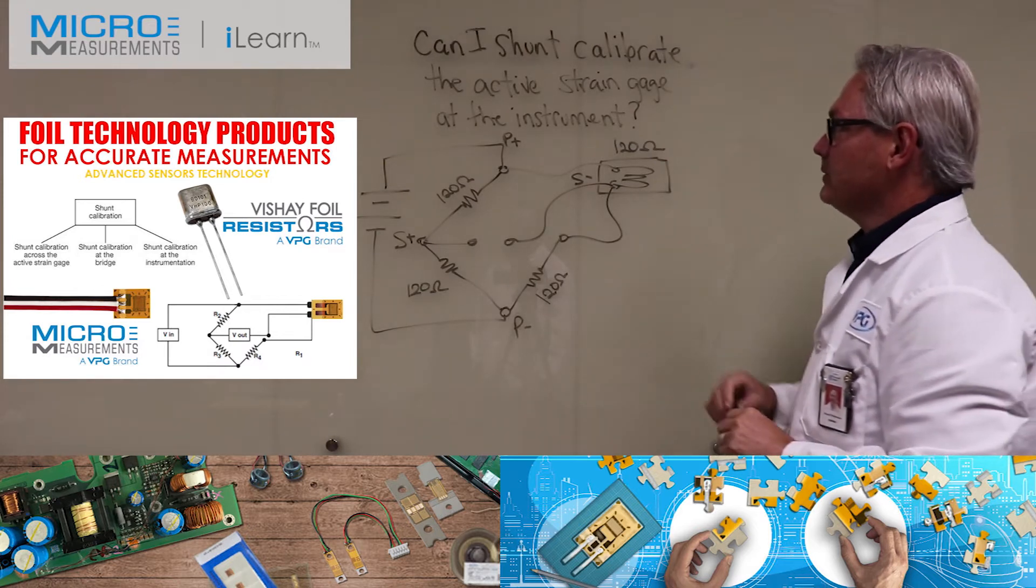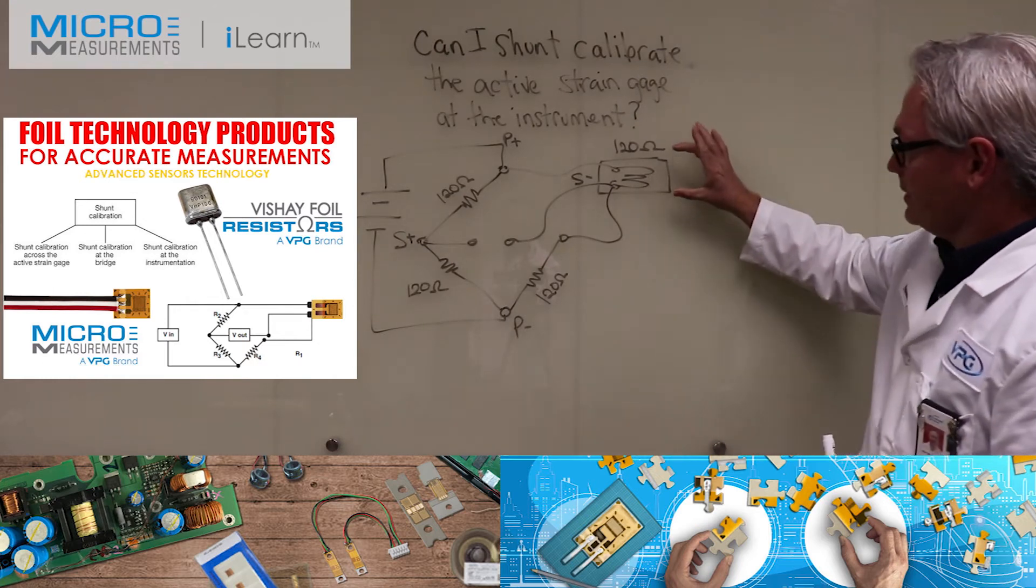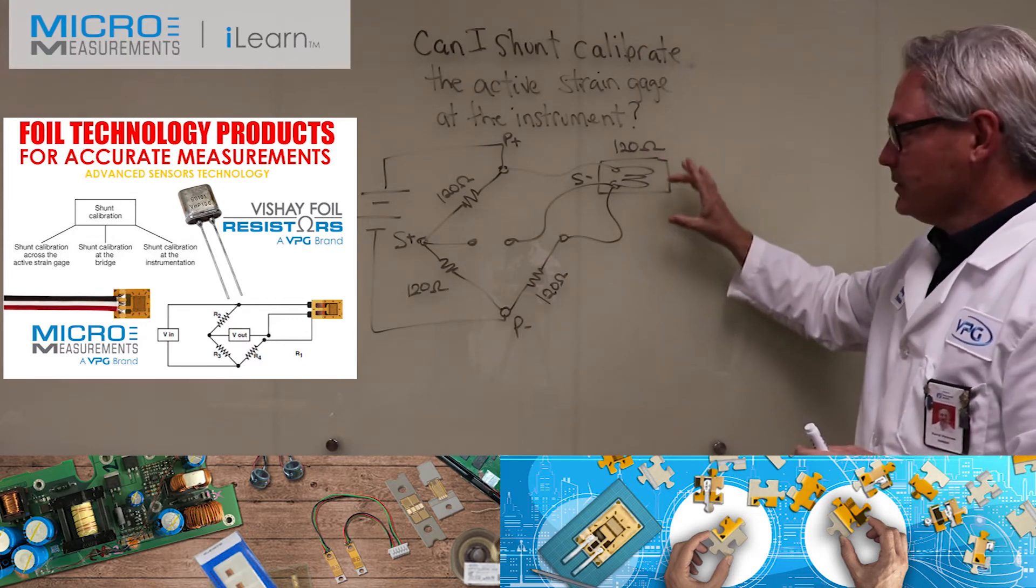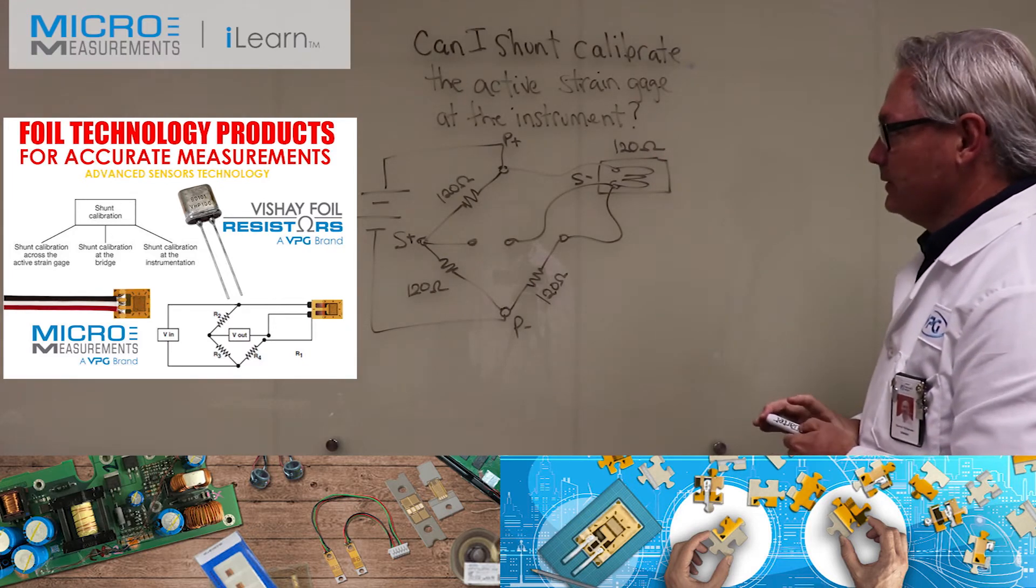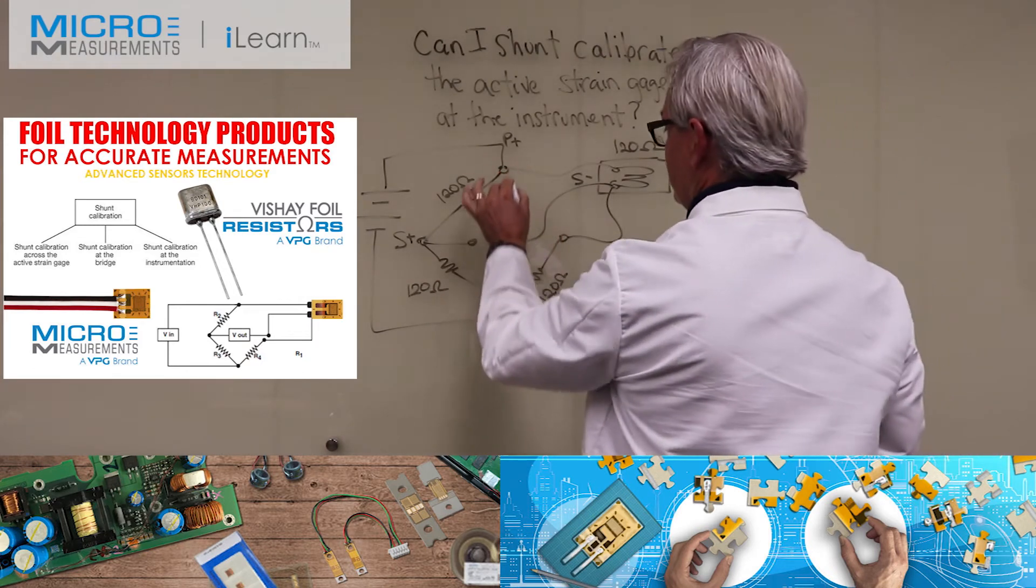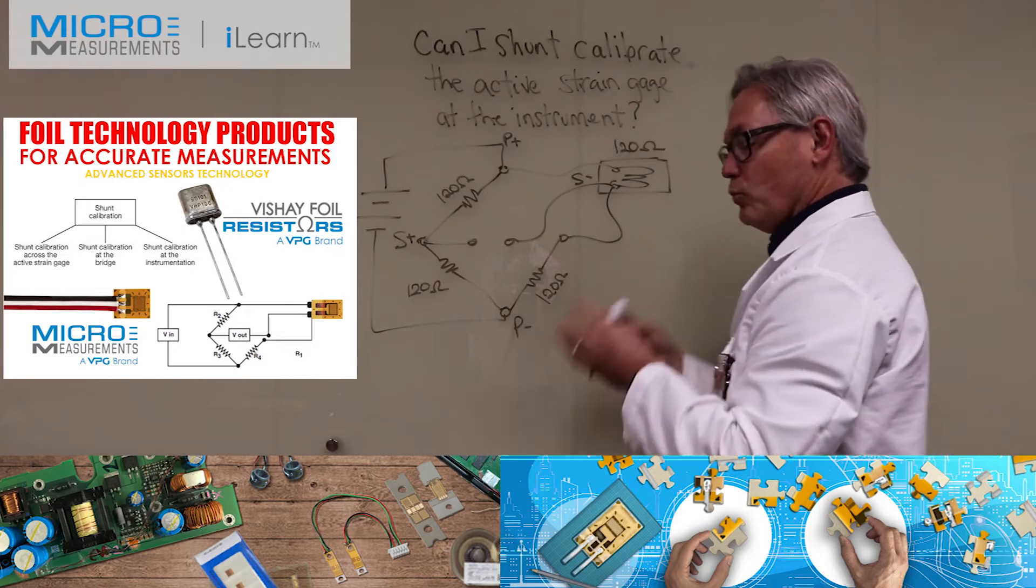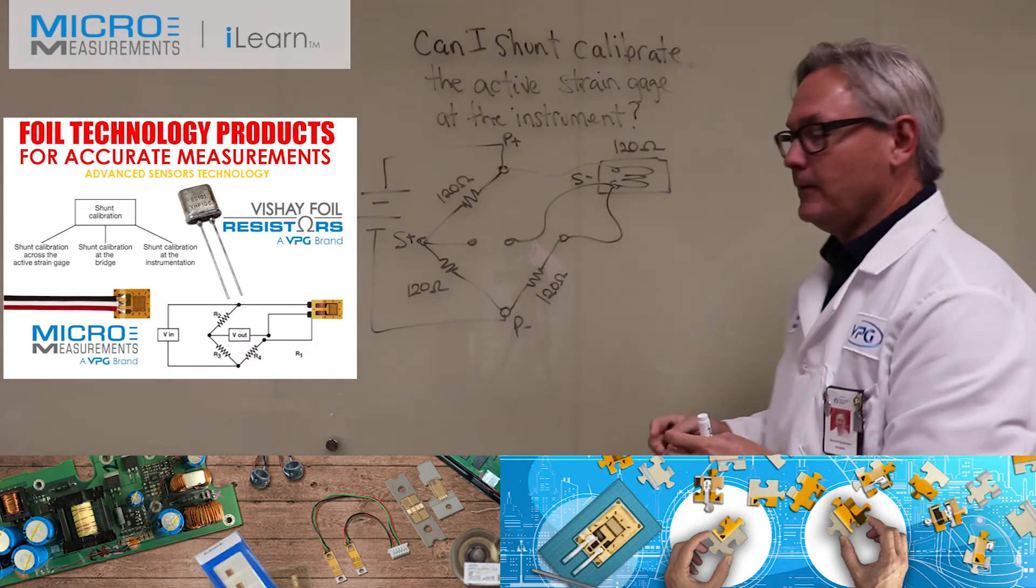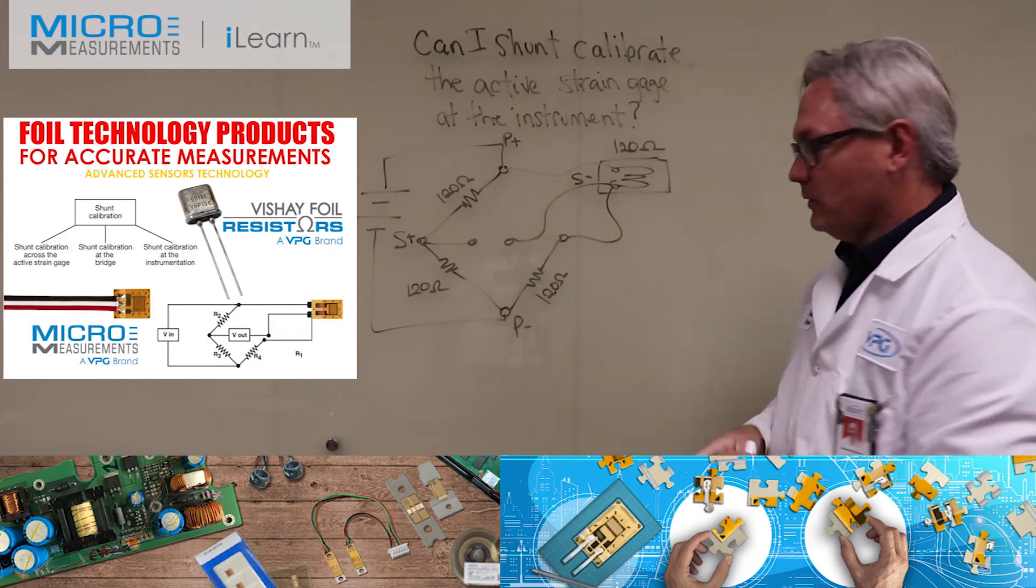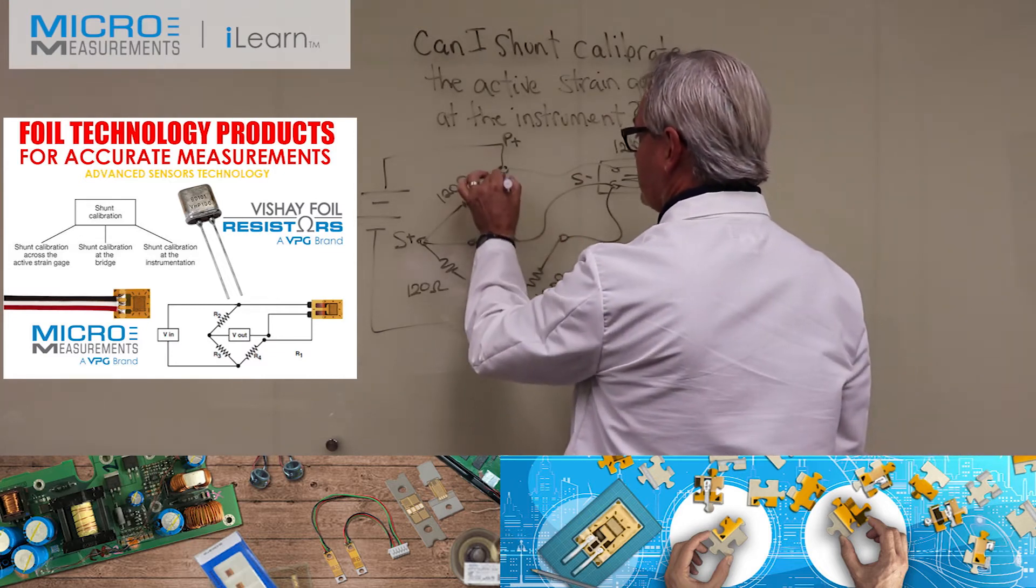When we talk about "can I shunt calibrate the active gauge at the instrument," we're talking about connecting a resistor in parallel across the strain gauge, which is not a very convenient location out at the gauge. But imagine doing this back over here at the instrument where it's much more convenient. Can you shunt calibrate this strain gauge back over at that location? One of the most obvious spots to do that is right here.